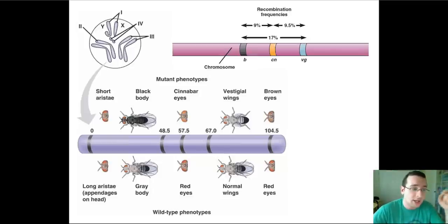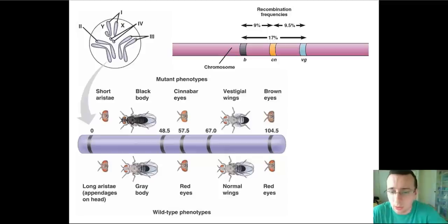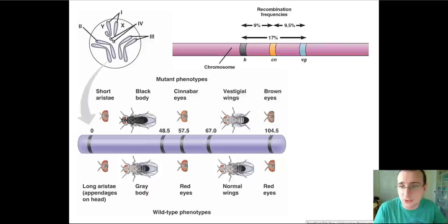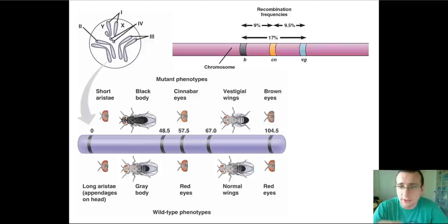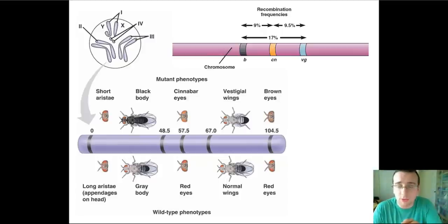If you know recombination frequencies between different pairs of genes, you can create a map of the chromosome. For example, if gene B and gene CN are 9% apart and gene CN and gene VG are another 9.5% apart, you can create a picture of how the chromosome looks. The only problem is that if you get a recombination frequency of 50%, that's basically the same as a gene that's independently assorting — meaning there's no chance these genes are traveling together, as if the gene were in a completely different chromosome.